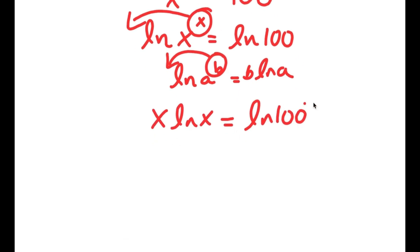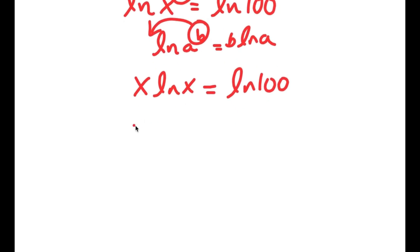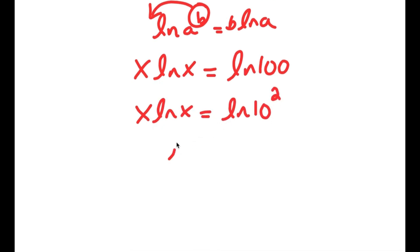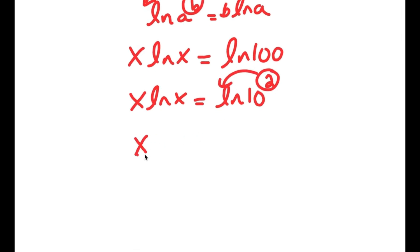Now, ln 100 is the same thing as ln of 10 squared. So I get x times ln x is equal to ln of 10 squared. And again using the log power rule, I can move 2 to the front, so I get x times ln x is equal to 2 times ln 10.